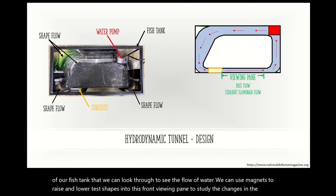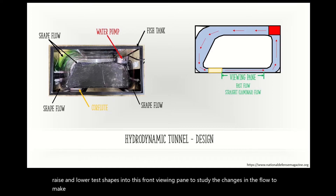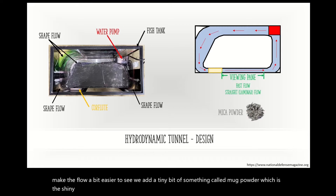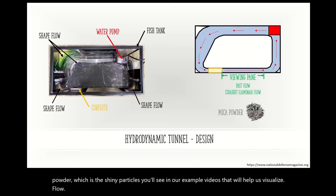To make the flow a bit easier to see, we add a tiny bit of something called mica powder, which are the shiny particles you'll see in our example videos that will help us visualize the flow. So now that we understand what a hydrodynamic tunnel is, let's look at some examples.